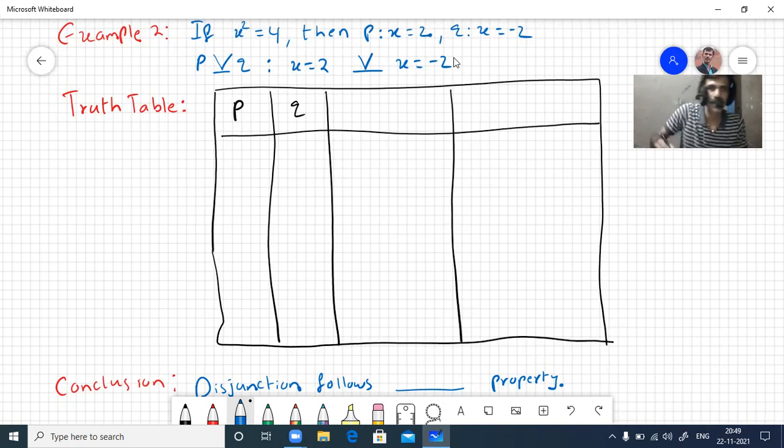Let us now write the truth table. When only a simple statement is there, it can be either true or false. When we are having two statements like p and q, there are four possibilities, four different combinations. First, both statements are true. First statement is true, second statement is false. First statement is false and second statement is true, or both are false. Now we'll write the truth table.